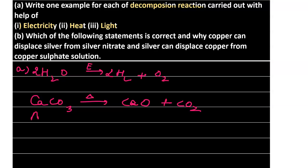For light: silver salts generally undergo photochemical decomposition. Silver chloride (AgCl) on passing light dissociates into silver and chlorine. Since chlorine exists as Cl2 in nature, the balanced equation is: 2AgCl → 2Ag + Cl2.